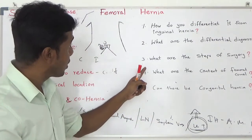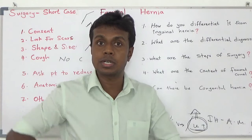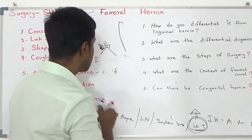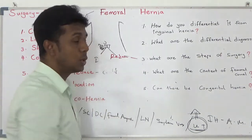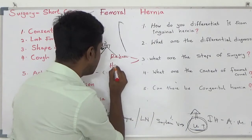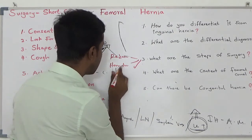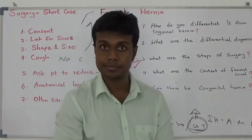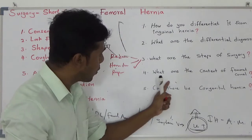What are the steps of surgery? Number one: reduce the content back into the abdomen. Number two: remove the hernia sac. Number three: repair the defect. You have to close the defect, otherwise it will recur.